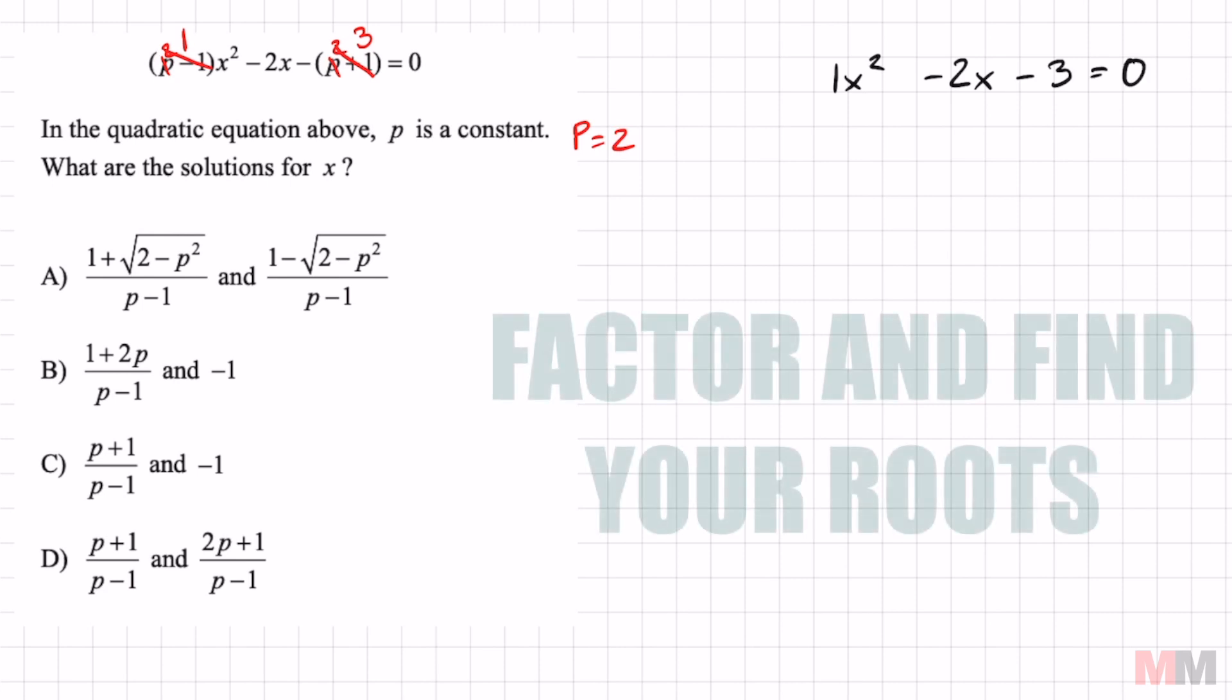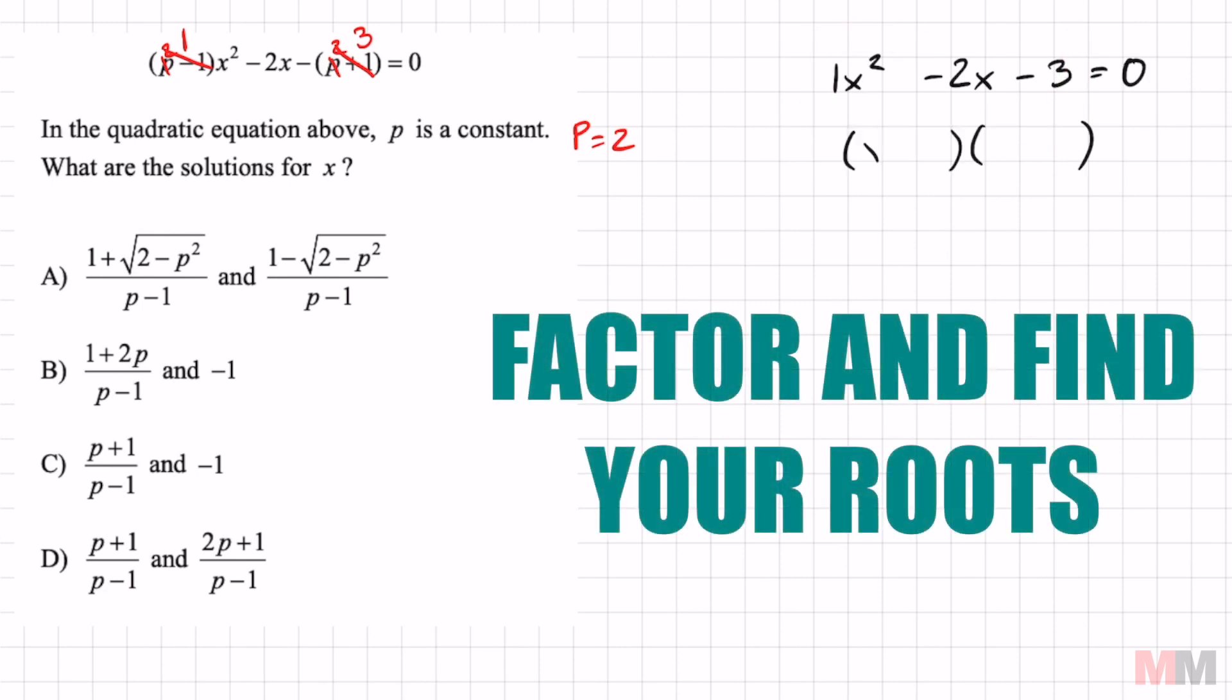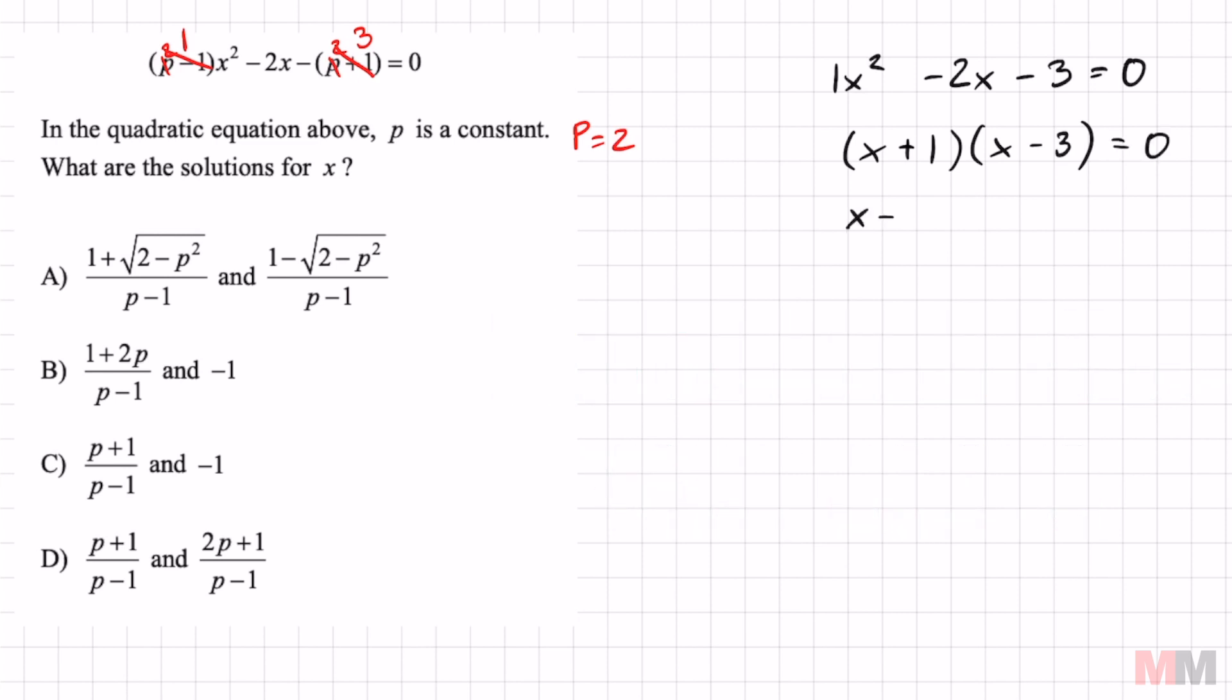You end up getting one x squared minus two x minus three equals zero. From here, go ahead and factor this quadratic. You got to think of two numbers that multiply to negative three, but add up to negative two. That will make it one and negative three. Find the roots by setting up equations equal to zero and solve those one-step equations. You get two answers: x equals negative one and x equals three.